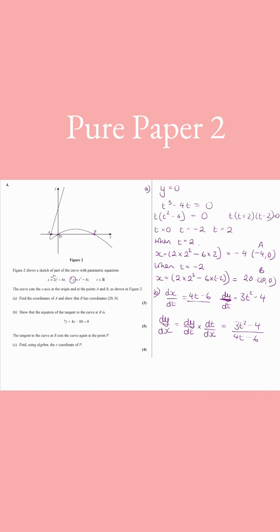Now, we want to know what happens at B. At B, we know t is minus 2. So we say when t equals minus 2, dy dx equals, and you get minus 4 sevenths, and that's going to be the gradient of the tangent.